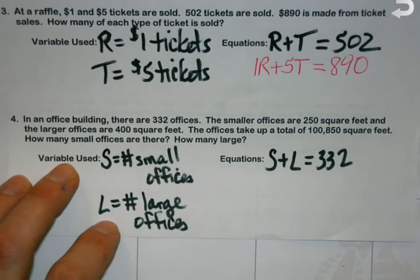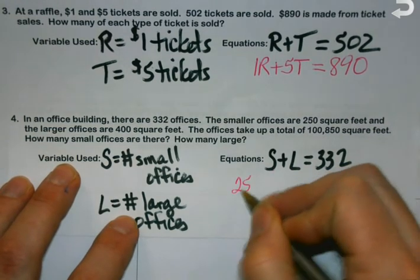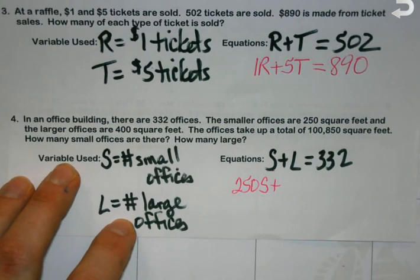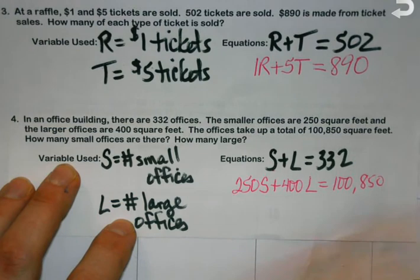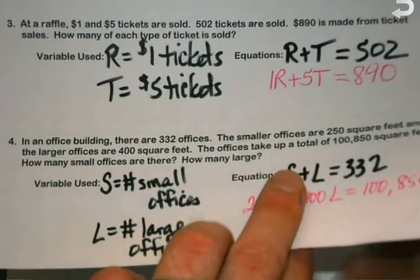How big is a small office? 250. So 250 times the number of small offices plus how big is a large one? 400. And how many total square feet do we have? 100,850. These are actual applications that can be used to try and figure out how much money you're making, how many offices would be better to break my building up into.